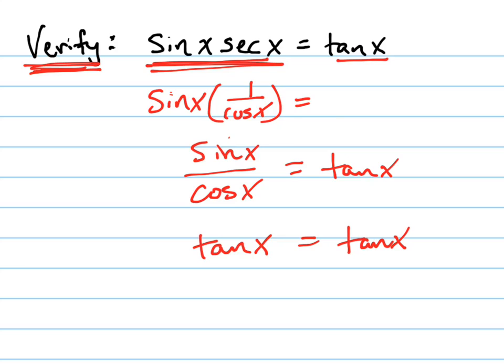Now again, different teachers want it written different ways. More and more lately I've been seeing teachers wanting you to write the equation out, keeping the equal signs together, and keeping one side of the equation the same, not ever changing it, and just manipulating the other side of the equation until you finally get to where they are both equal to each other. That's how you verify a trig identity.